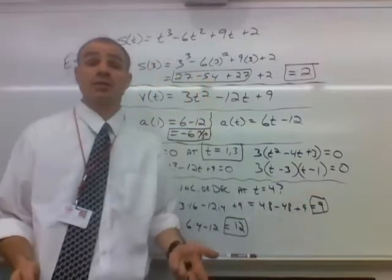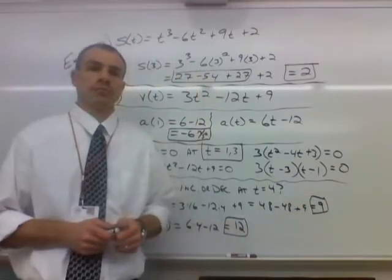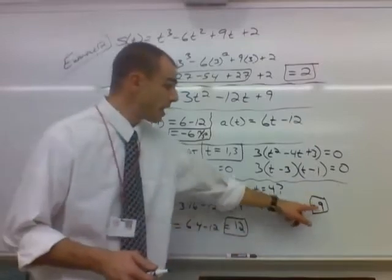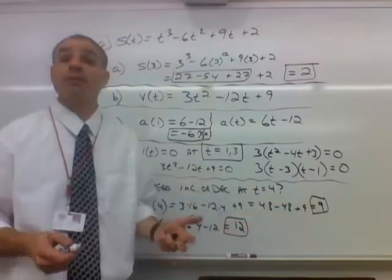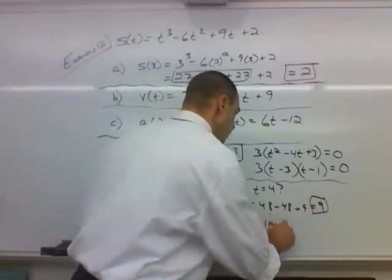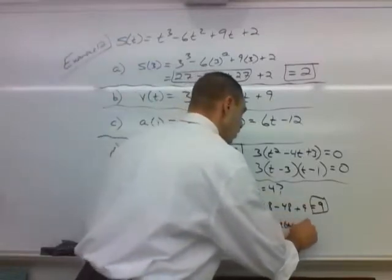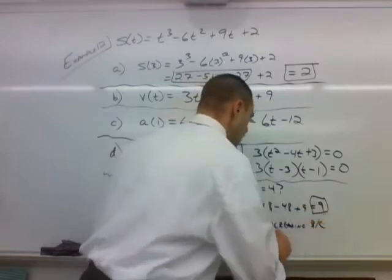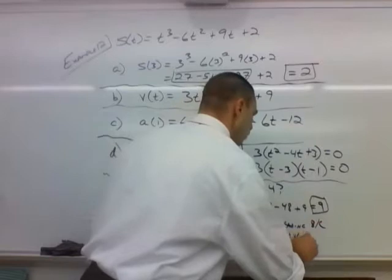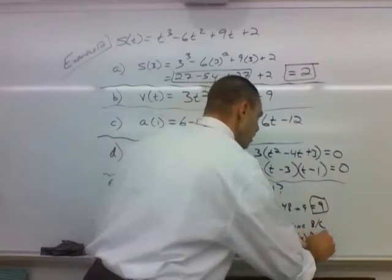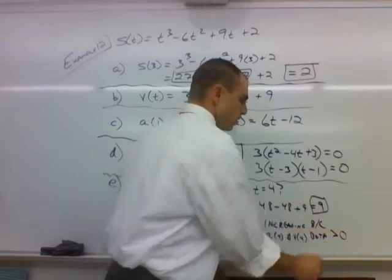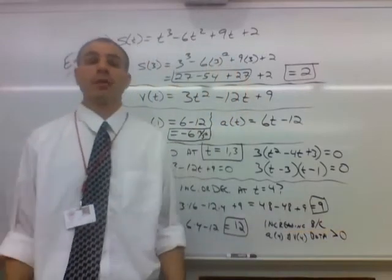So is our speed increasing or decreasing? Yeah, it's increasing because our acceleration and our velocity have the same sign. They're both positive. So we are increasing speed. Because a of 4 and v of 4 are both greater than 0. They're both positive.